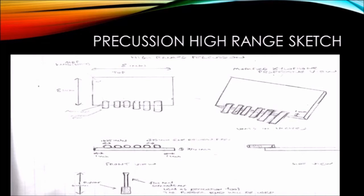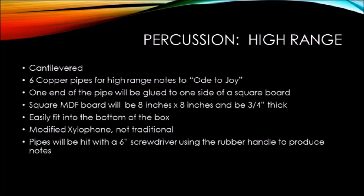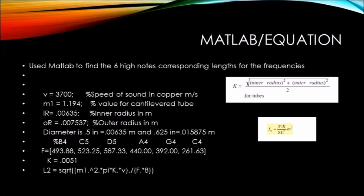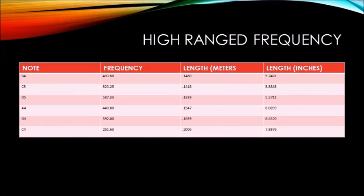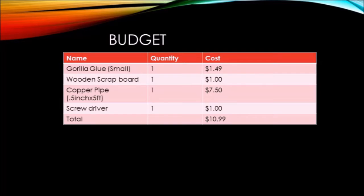The high-range percussion instrument uses a cantilever design — 6 copper pipes attached to one end of a square MDF board. The MDF board will be 8 inches by 8 inches and three-quarters of an inch thick, fitting easily into the bottom of the box. It is a modified xylophone style. MATLAB was used with the given equations and variables to calculate a table holding frequencies along with their corresponding lengths. The instrument comes in easily under the $15 budget constraint using only 4 different items.